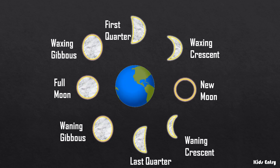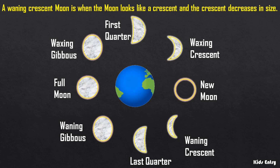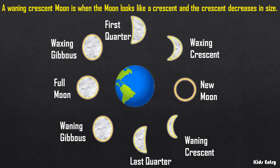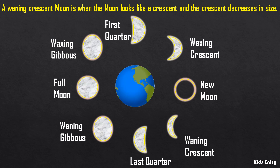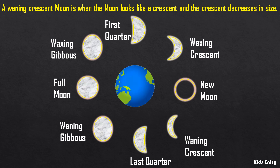A waning crescent moon. A waning crescent moon is when the moon looks like a crescent and the crescent decreases in size.